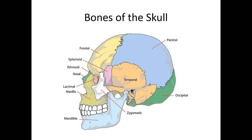Quick review of anatomy — where we always start. It's most important to understand normal and the way that we're built to understand what is abnormal and what can break. When looking at the bones of the skull, the most important ones to focus on: the parietal bone is the majority of the skull, the frontal bone lies right over your forehead. If you're describing a laceration or contusion, saying 'parietal area' gives you good odds because that's the majority of the skull.